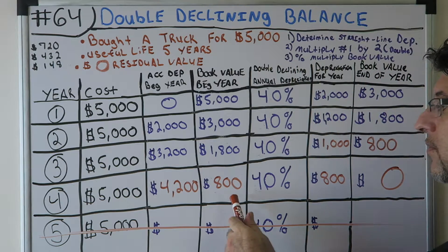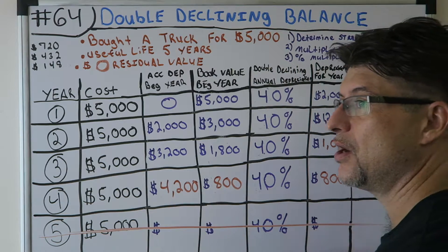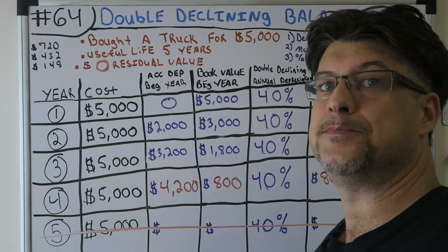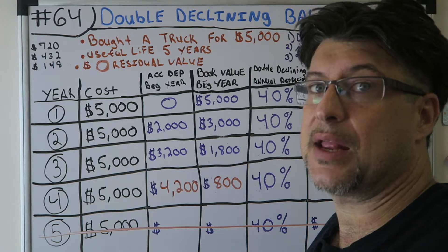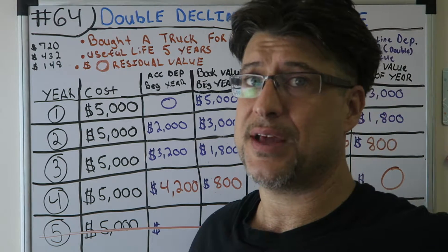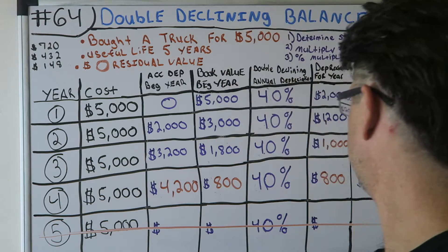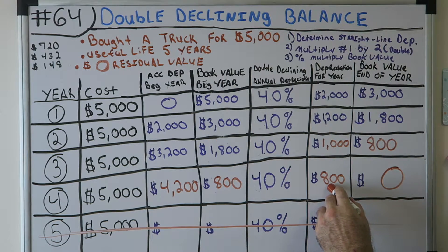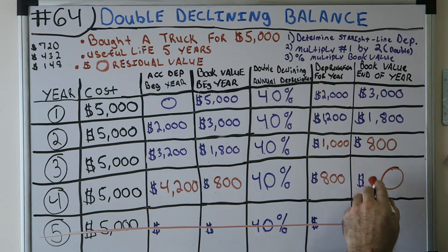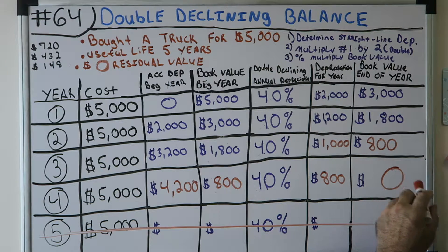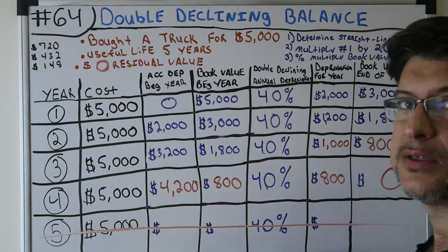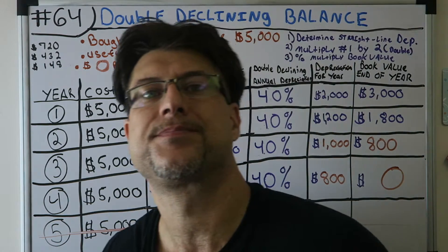We only have eight hundred dollars left to depreciate on the truck, and eight hundred dollars is less than the thousand-dollar straight-line amount. So we're just going to take the whole eight hundred dollars right here, leaving the truck fully depreciated. After four years it's fully depreciated — the fifth year we don't even depreciate it.